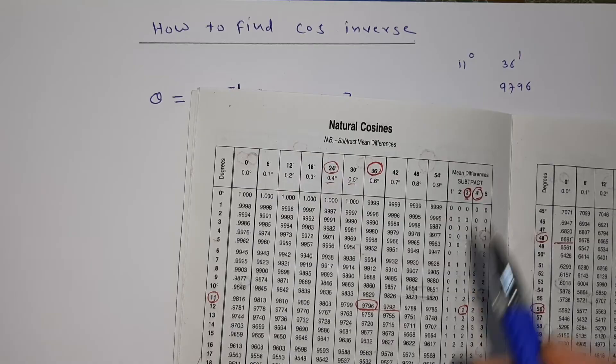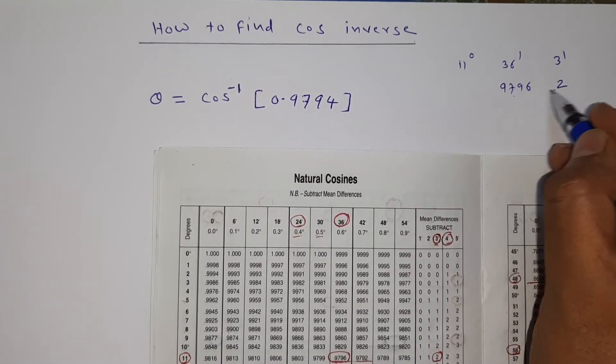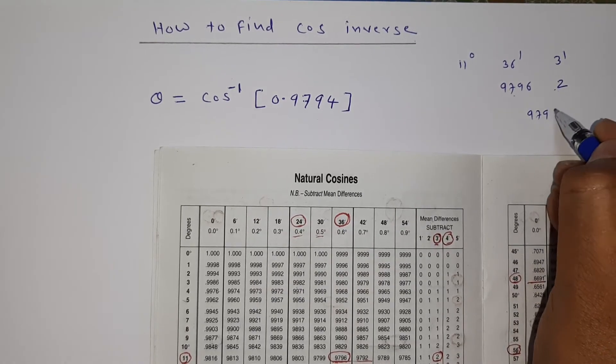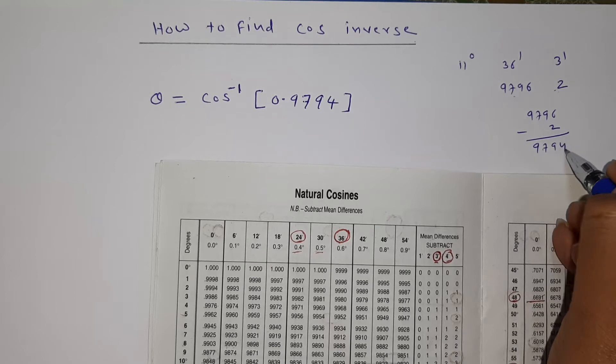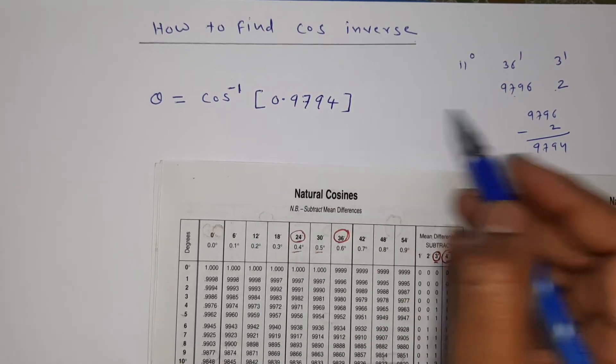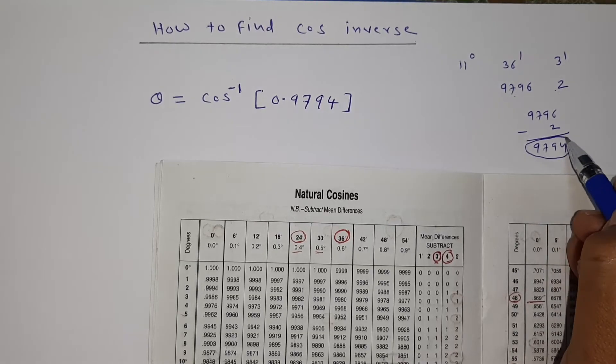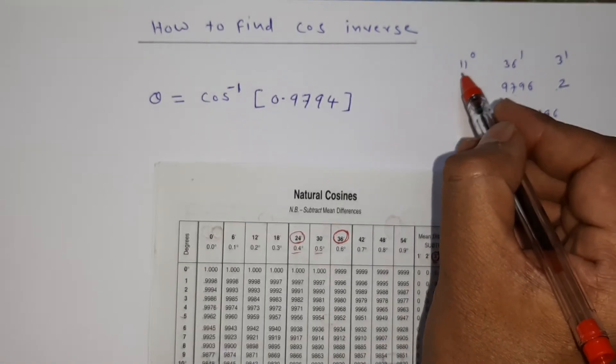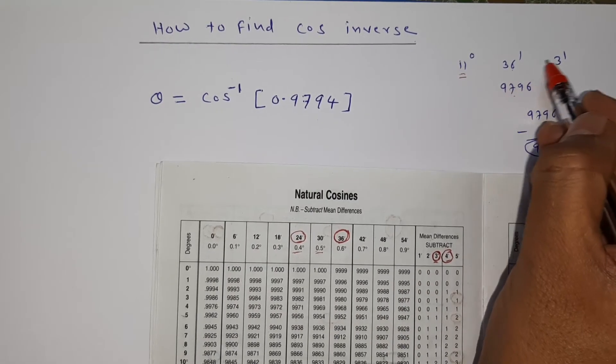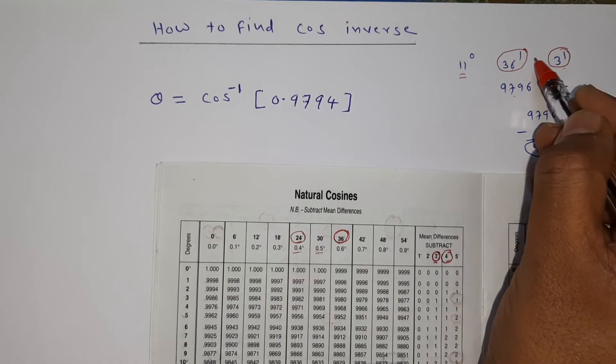Here I am getting 2 at 3 minutes. So in 3 minutes I got 2. This value has to be subtracted, that means 9796 minus 2 will get 9794, that is our required value. So 9796 minus 2, we got required value 9794. But where we got this value?